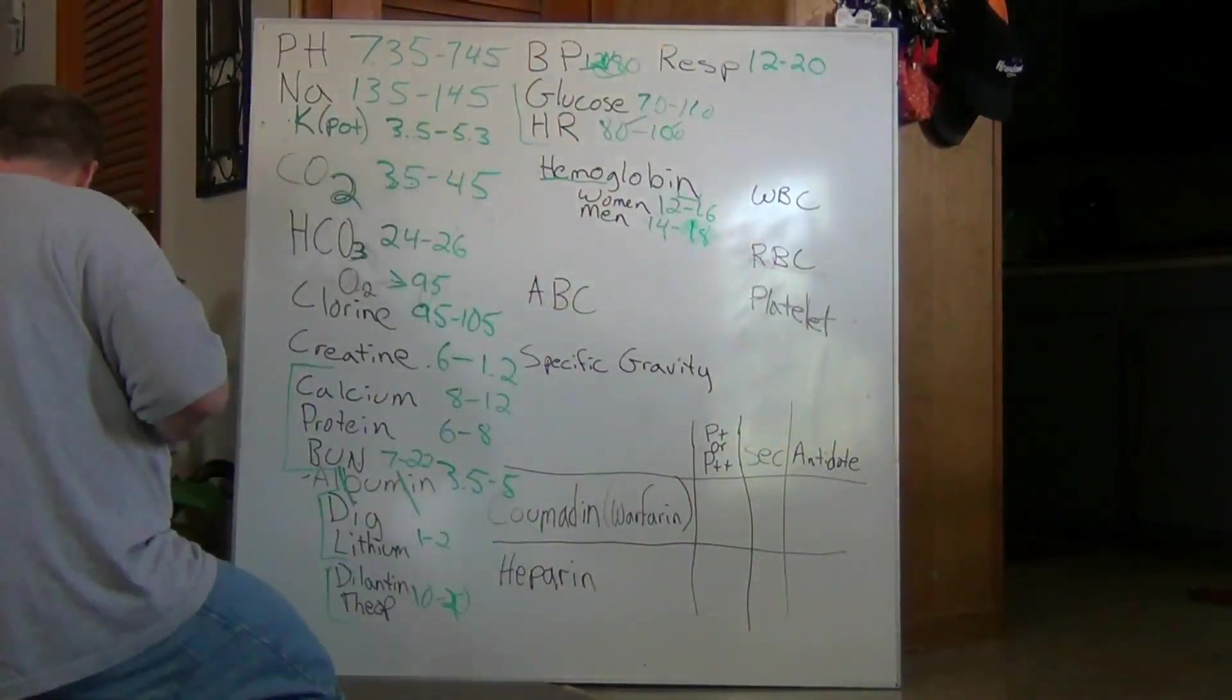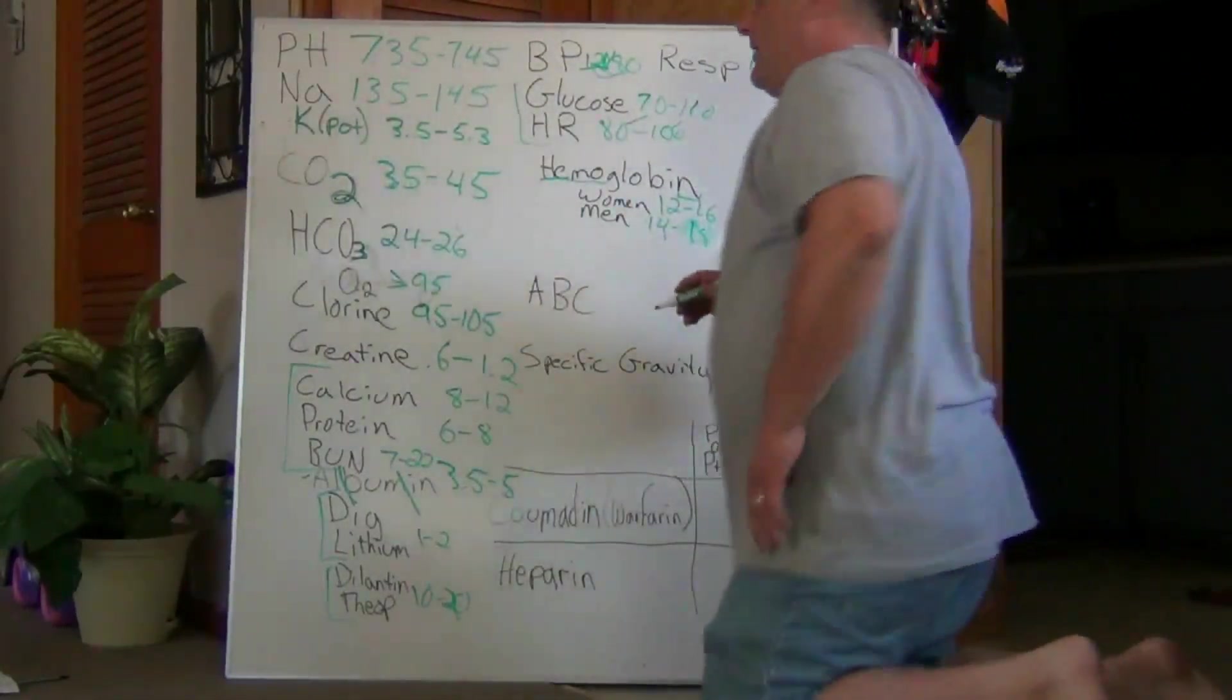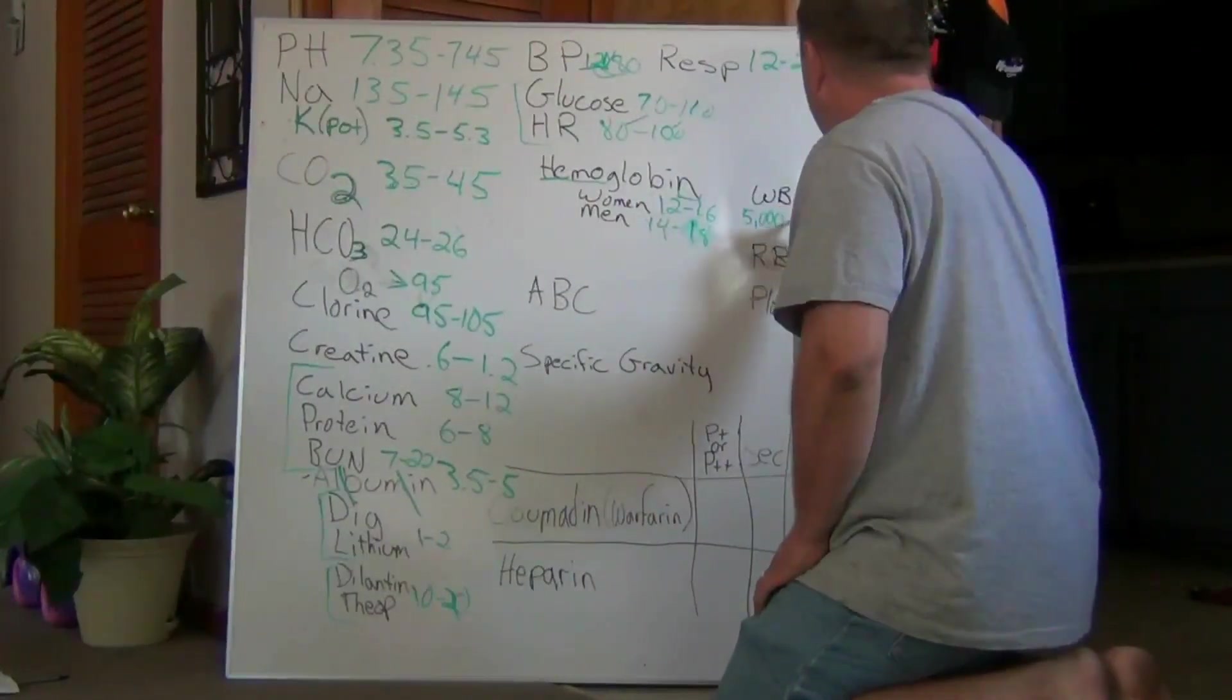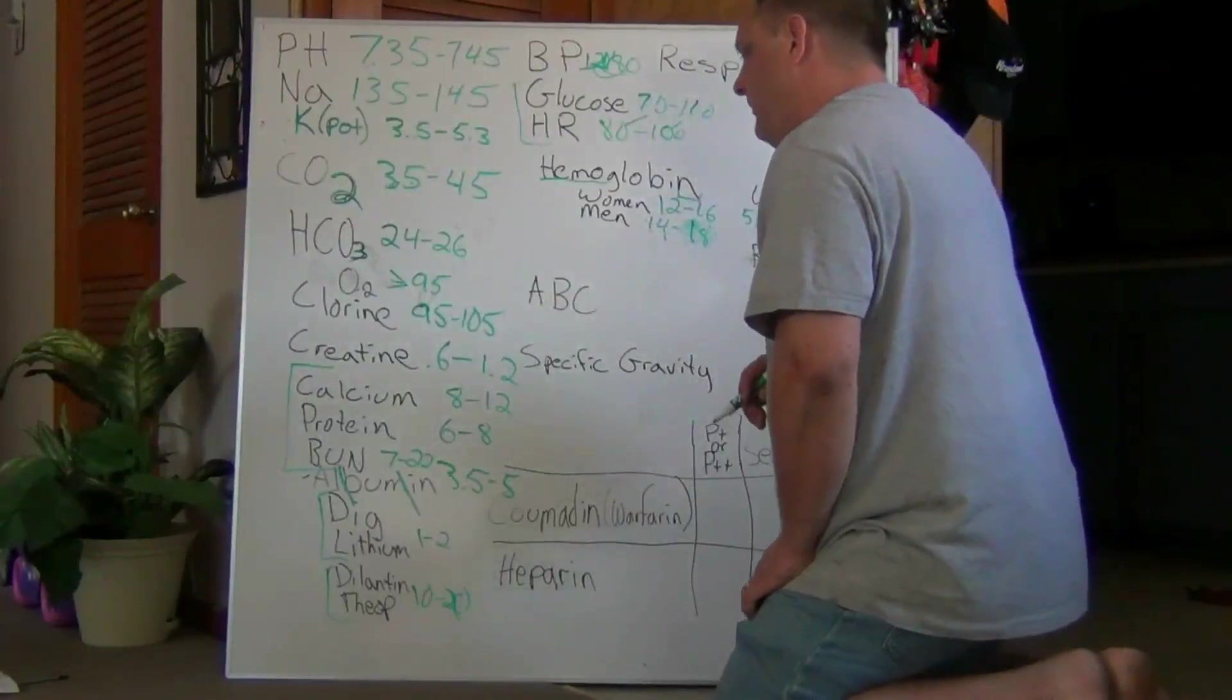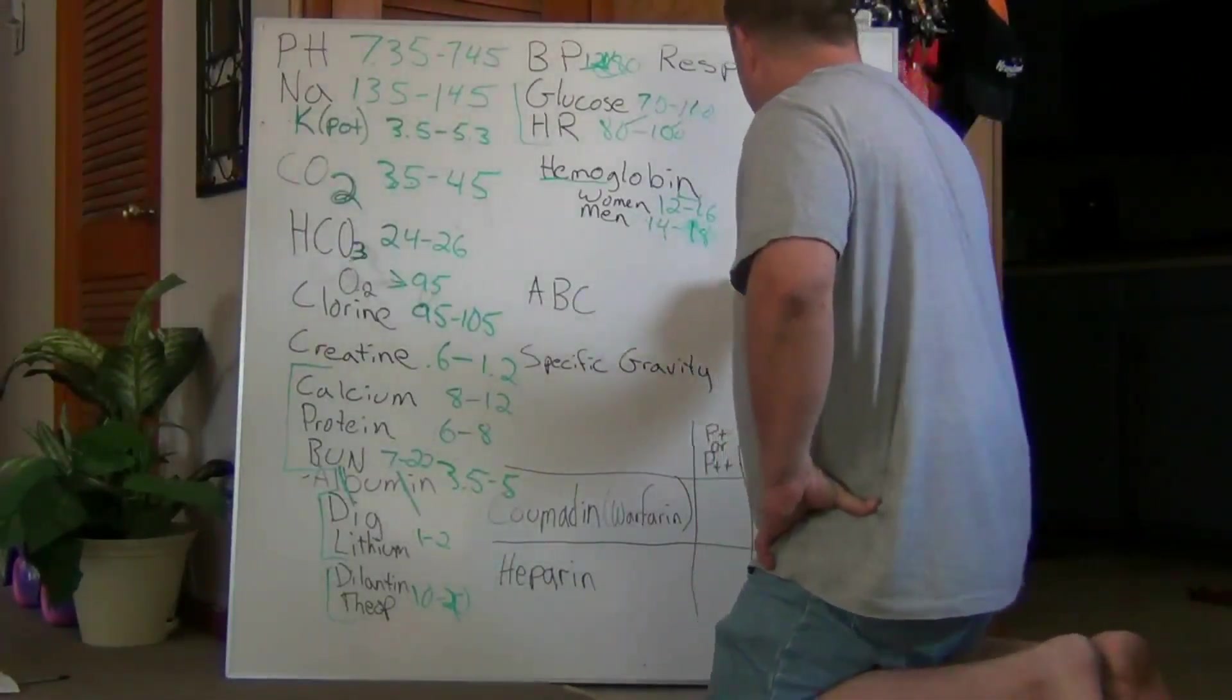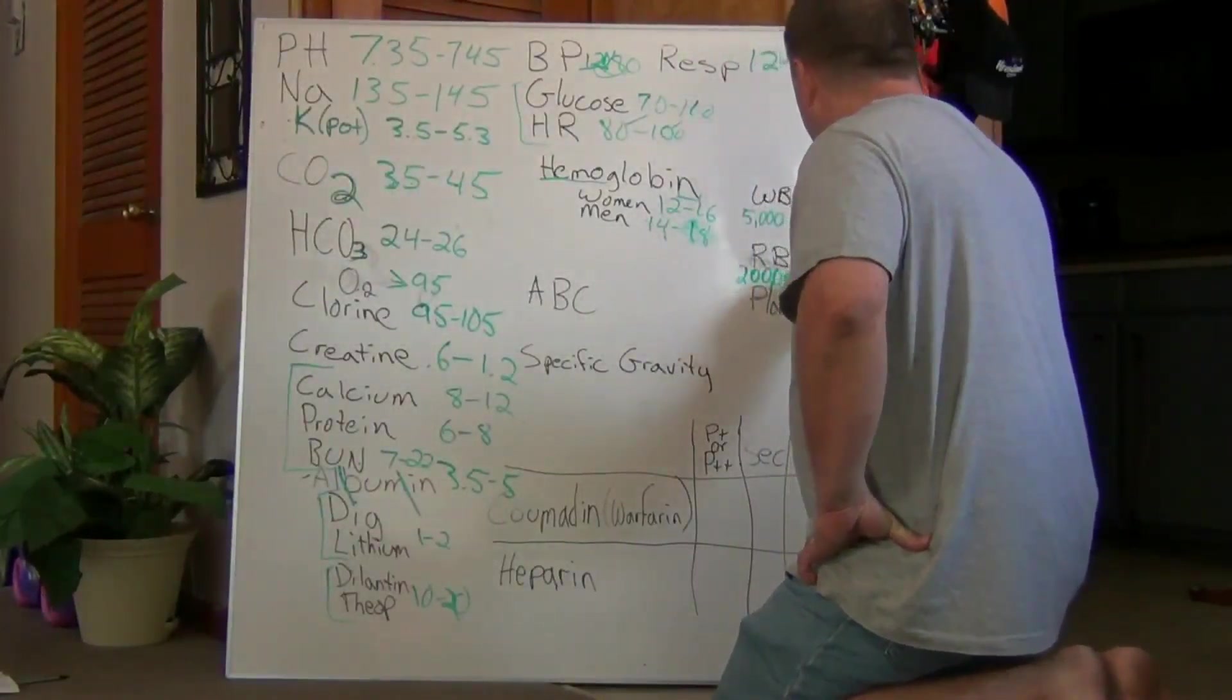The white blood count... White blood count has a 4 to 5 digit number. So the first 4 digit number is 5,000. The 5 digit number, we're going to double this. And so it's going to be 10,000 for white blood count.